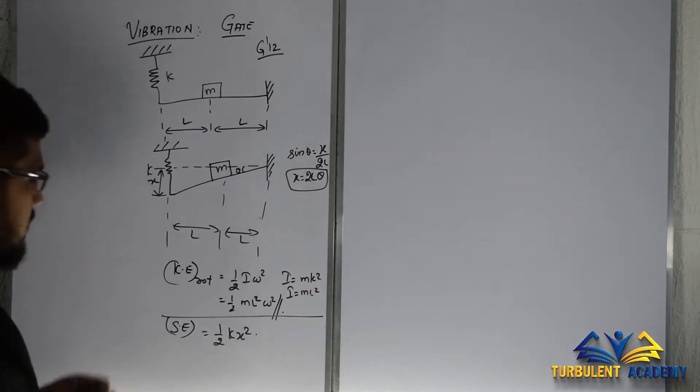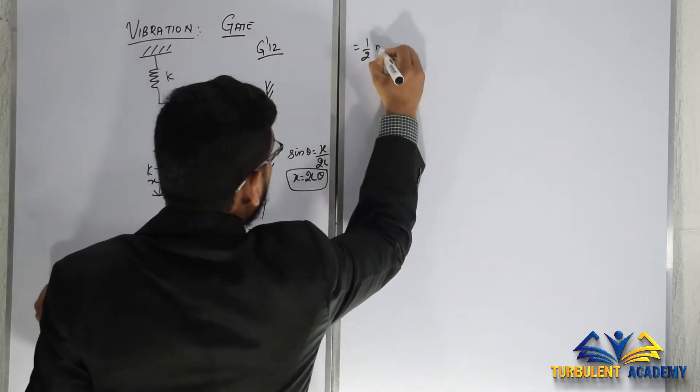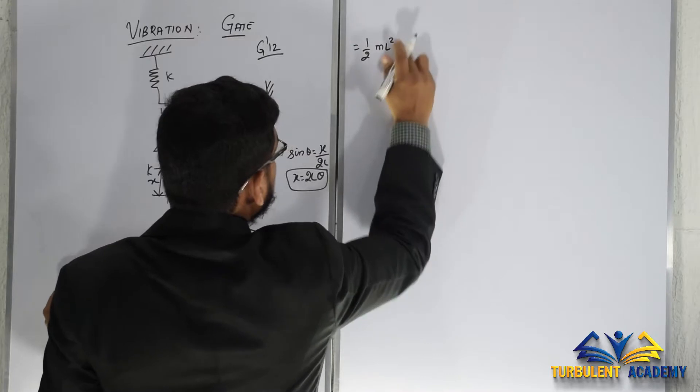If you substitute this, we are going to get the answer. Everything in terms of l. So half ml squared omega, I'm going to write it as theta dot squared.